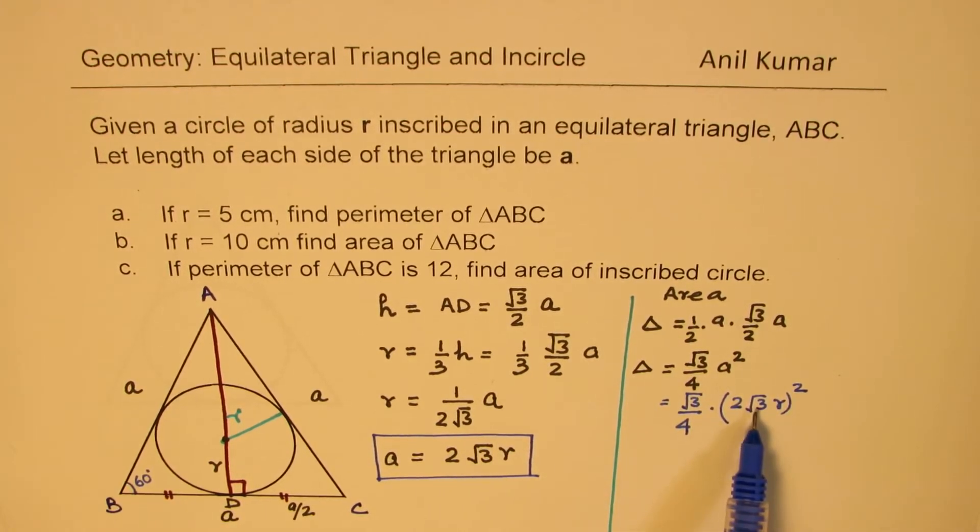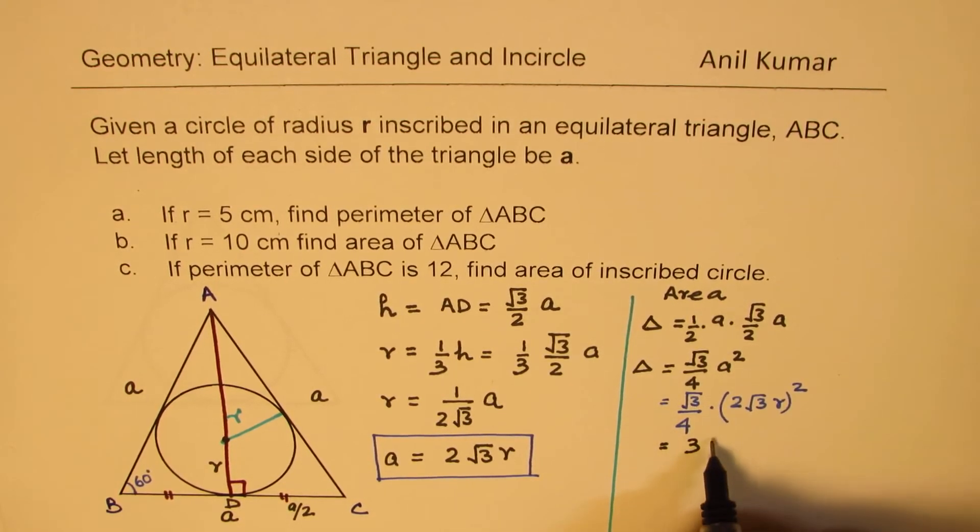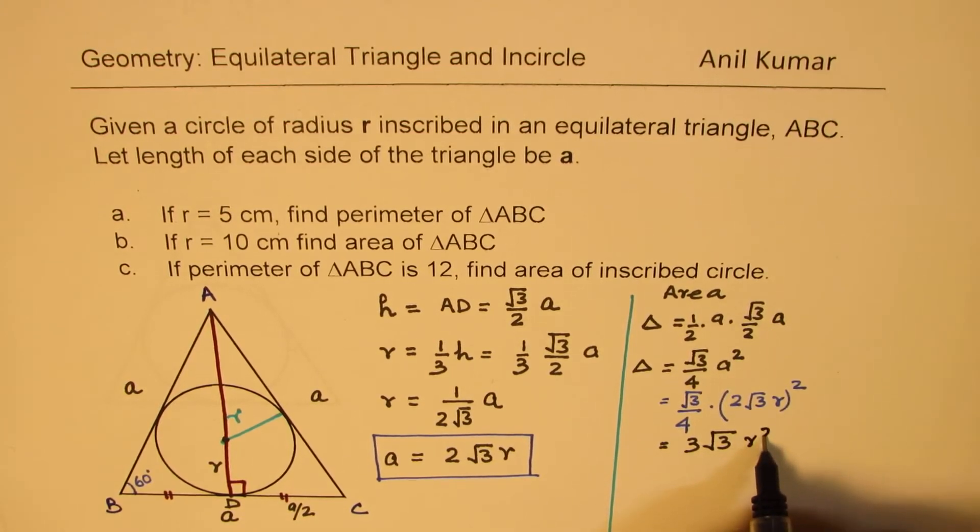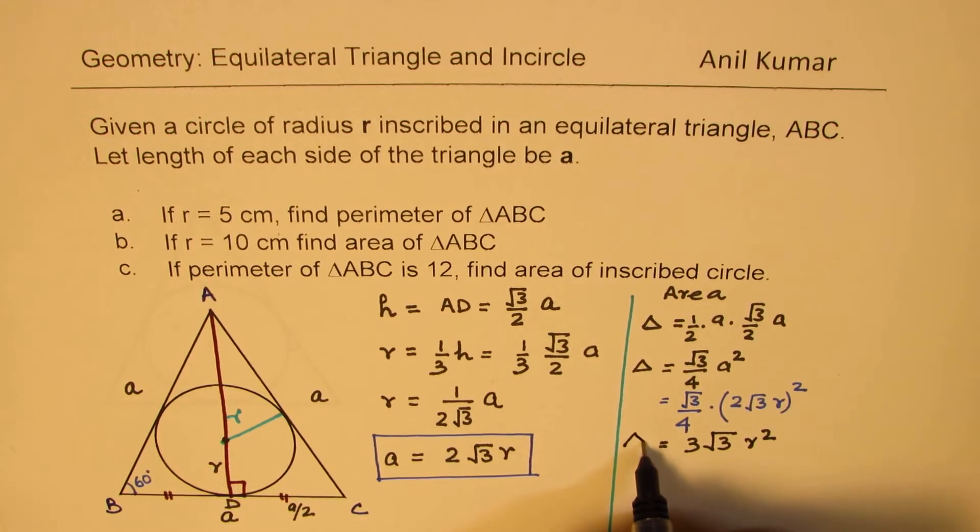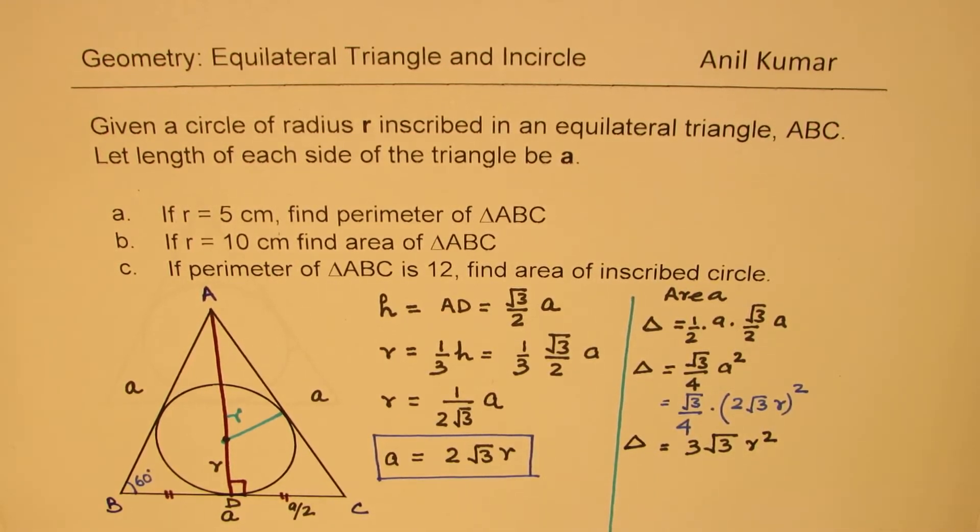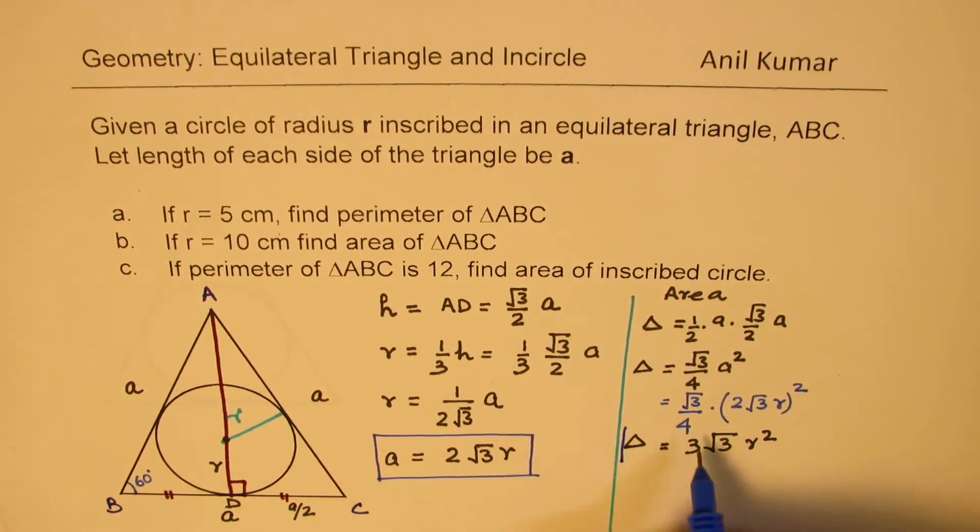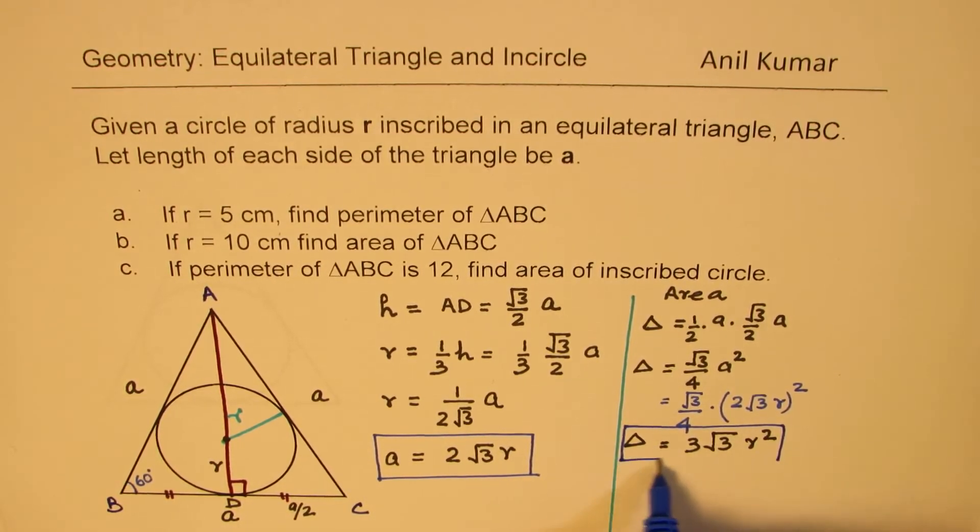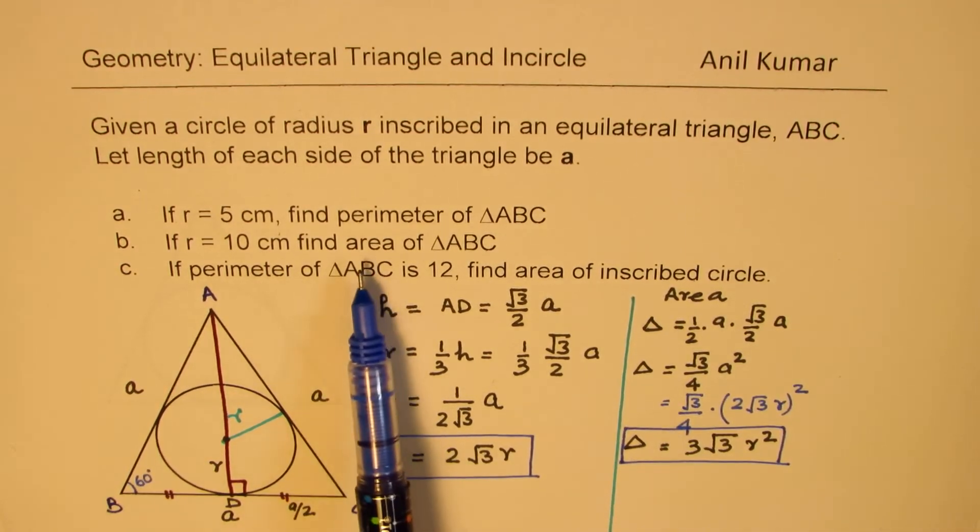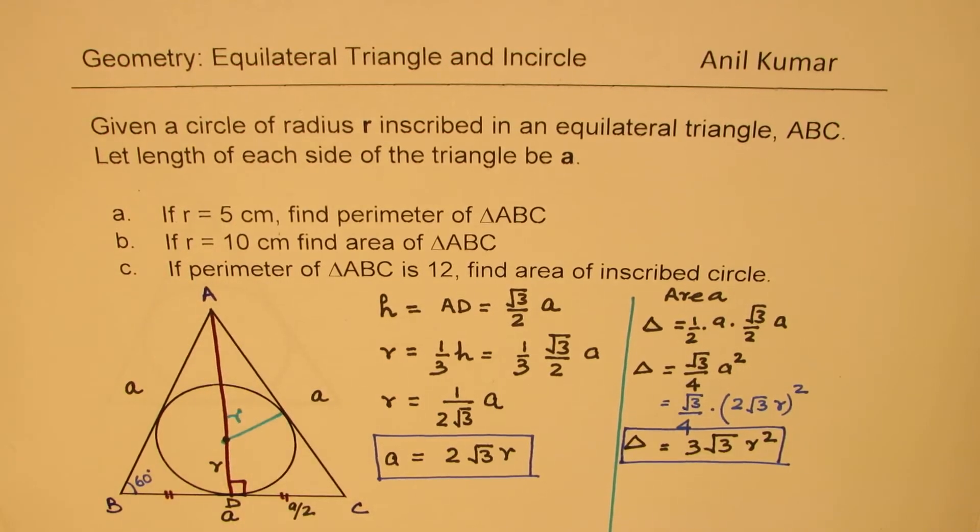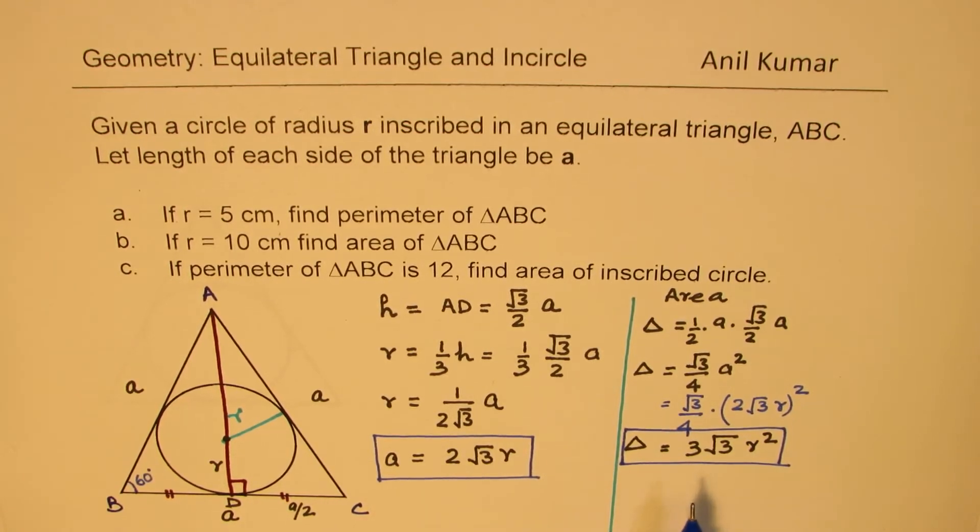When we simplify, (√3)² = 3, and 4 cancels with 4, giving us r². Therefore, the area in terms of r is 3√3·r². This expresses the area of the triangle in terms of the radius of the inscribed circle, which helps you find the area once you know r.